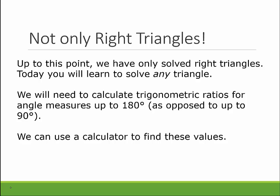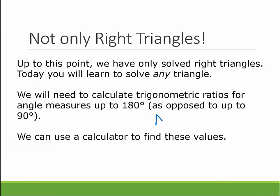In order to do that, we have to calculate trig ratios for angle measures up to 180 degrees, as opposed to only up to 90. Because remember, in a right triangle it can only add up to 180, and we've already used 90 of it up. So if you have a really obtuse triangle, these two angle measures are going to be super tiny, and this angle can get as close to 180 as possible. And we can use a calculator to find these values.